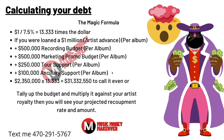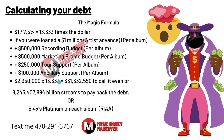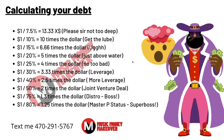So to call it even it would look like this: 8,245,407,894 billion streams to pay back the debt, or 5.4 times platinum on each album according to the RIAA. You'd have to go almost five and a half times platinum to pay this back if it were just based on record streams — but it's not, because most people have a 360 deal. So let's keep going.